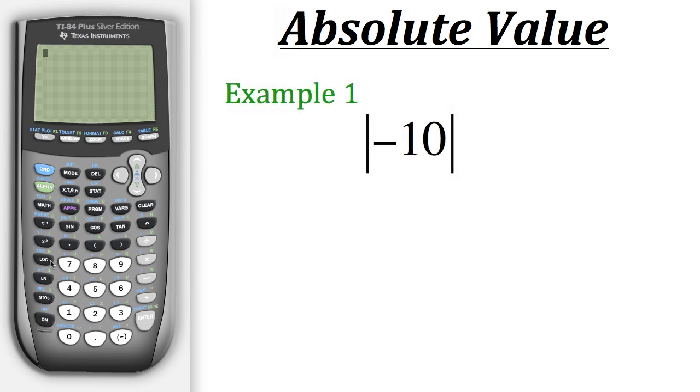In order to do absolute value on the calculator we need to first go to math, and then you can see that there's different tabs on the top. We need to go to num and then the very first option right here, the ABS and a parenthesis, that stands for absolute value.